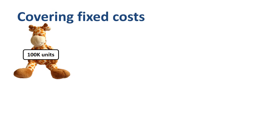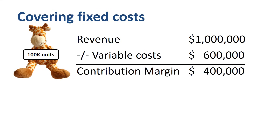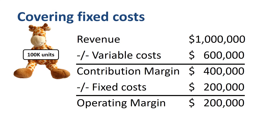How about 100,000 units? Revenue will be $1 million, variable costs $600,000, and contribution margin $400,000. We have $400,000 of contribution margin available to cover fixed costs, which is more than enough. Once fixed costs are covered, contribution margin starts contributing to profitability. The company makes a profit at the operating margin level of $200,000.